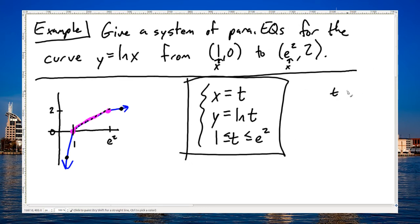You could do your txy chart if you want to confirm that if you were to plug in things between 1 and e squared, you would get points on the curve. 1 would get you x is 1, y is natural log of 1 is 0, e would get you x is e, y is natural log of e is 1. That would be this point right here.